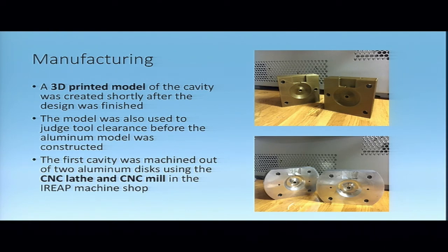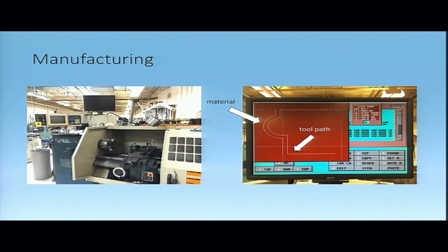Below in this picture is the aluminum cavity that I actually manufactured here in IREAP. I used the CNC lathe to cut the cavity shape, and then I used the mill to drill all of these holes for the mounting hardware.